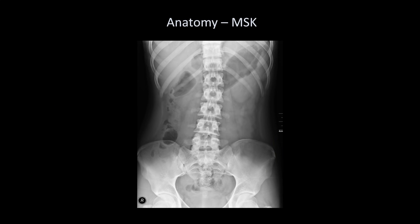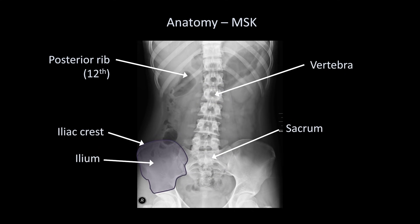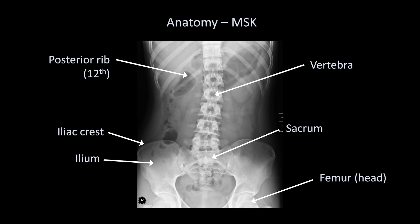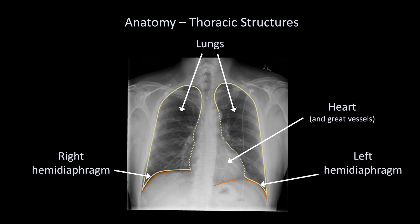Then there are musculoskeletal structures — obviously these include the ribs, with the lowest being the posterior 12th rib. The vertebrae. The sacrum. The ilium, the largest of the three pelvic bones. There is not a distinguishable demarcation between the ilium and the pubis and ischium in adults, as the three pelvic bones normally become fused. Abdominal films will usually catch the head of the femur as it articulates with the acetabulum. There is also a triangular-shaped shadow on either side of the vertebral column caused by the psoas muscle. Since upright chest films are occasionally ordered for abdominal symptoms, we also see the heart, great vessels, lungs, and hemidiaphragms.